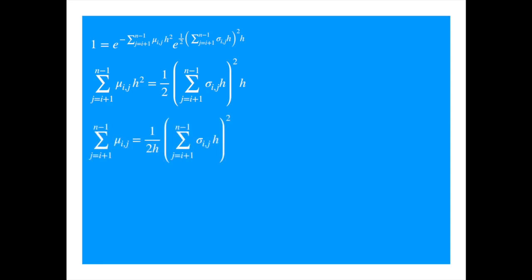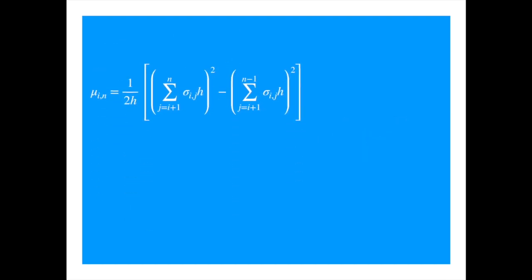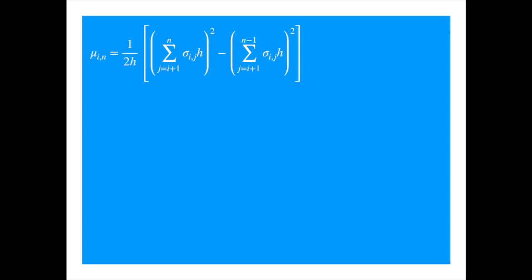Now here's the trick that brings it all together. What's the increment of this process? Let's see, we increase the upper value of the index by one, and then calculate the difference. And this is the drift of an instantaneous forward of maturity Tn, in the interval from time i to time i plus 1.